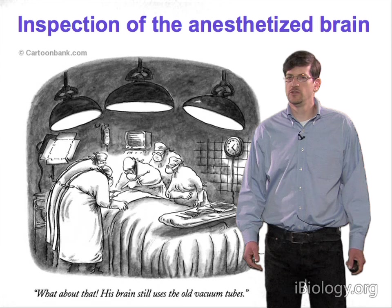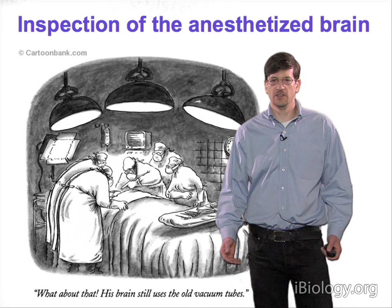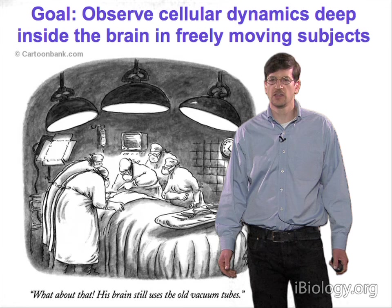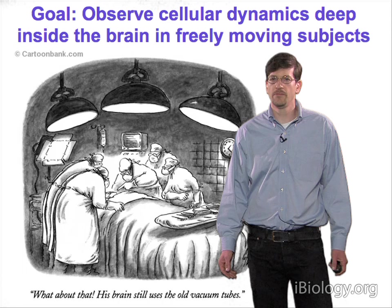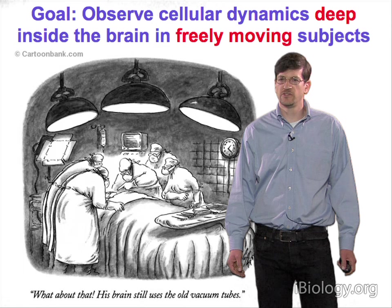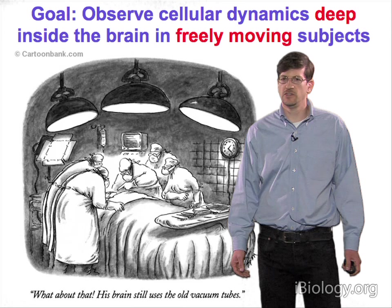This is a Far Side cartoon providing the physicist's view of this — the caption reads: 'What about that? His brain still uses the old vacuum tubes.' But ideally, we'd like to inspect cells not just in anesthetized subjects, but in animal subjects free to move about the laboratory. And to look at cells not just in superficial brain areas, but in deeper brain areas beyond the penetration depth of conventional microscopy. The two main challenges are imaging cells deep in tissue, and observing cells in freely moving animals.